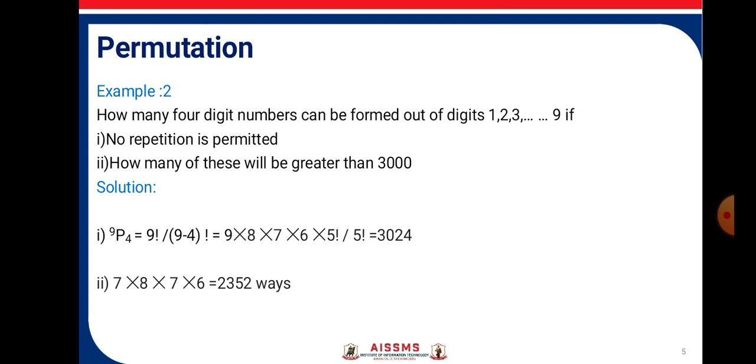9P4 that is 9! / (9-4)! = 9! / 5!. We get 9×8×7×6×5! / 5! = 3,024. Second question, how many of these will be greater than 3,000?